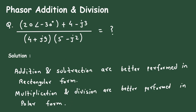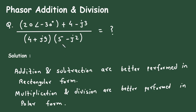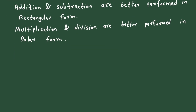So first of all, let us copy what is given and convert it according to these two statements. We will convert to rectangular form for addition and subtraction, and also convert to polar form for multiplication.